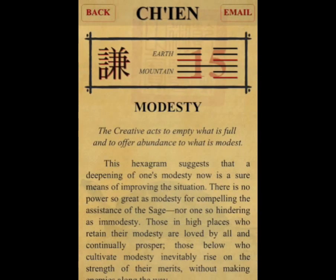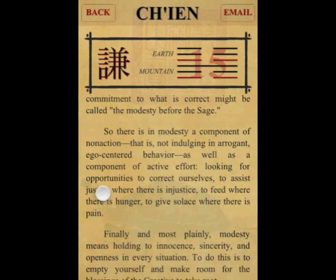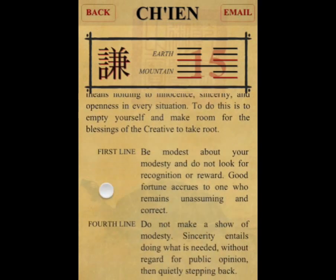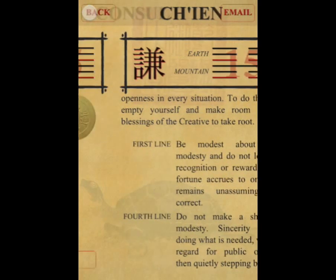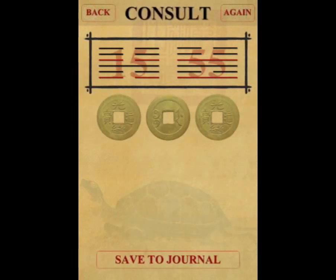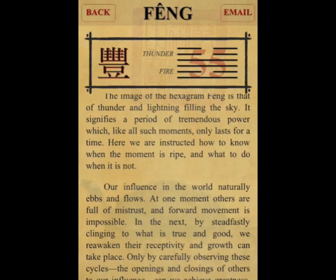Once the initial hexagram is built, just tap on it to read its text and any changing lines. Then tap the back button to return to the previous screen, where tapping the changing hexagram will make that one viewable.